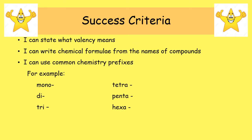In terms of success criteria, we want you to be able to state what valency means, to write the chemical formula from the names of compounds, and use common chemistry prefixes. By the end of today you'll understand what it means if a chemical contains the terms mono, di, tri, tetra, penta, or hexa in its name.